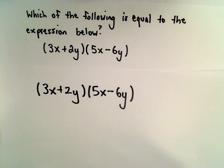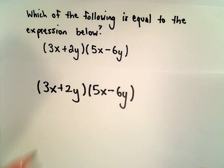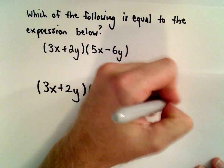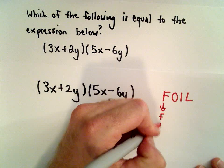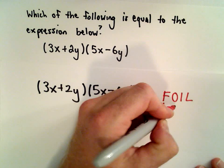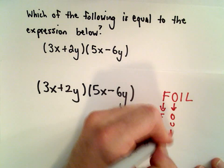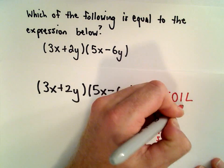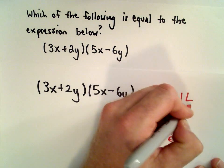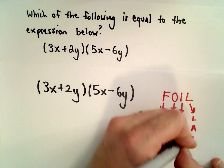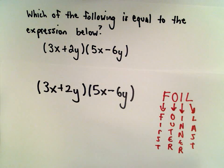Here we're going to do some distributing using what they call FOIL. The F stands for first, the O stands for outer, the I stands for inner, and the L stands for last.